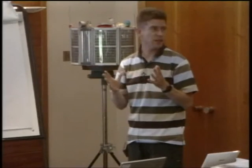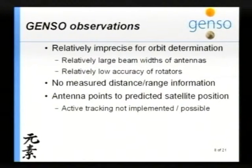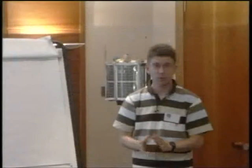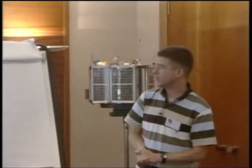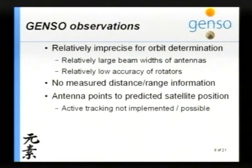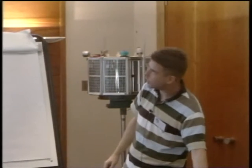The stations are relatively imprecise for orbit determination. You have a relatively large beam width on your antenna — maybe 10 or 20 degrees. So within that beam, the satellite is somewhere. With one station there's no use doing orbit determination, but maybe with 100 stations it gets better. A rotator already moves a few degrees in the wind. You have no information about the distance or range of the satellite — also a problem. The antennas of GENSO point in the direction GENSO thinks the satellite is, based on the TLE fed into SGP4. That's not where the satellite really is, but somewhere in the neighborhood. It's really challenging, but I think it is possible.